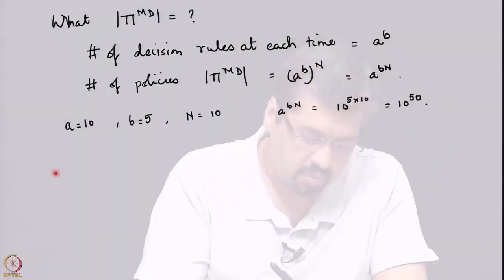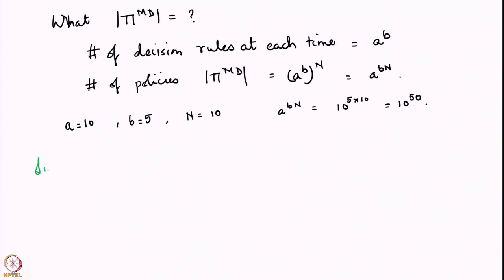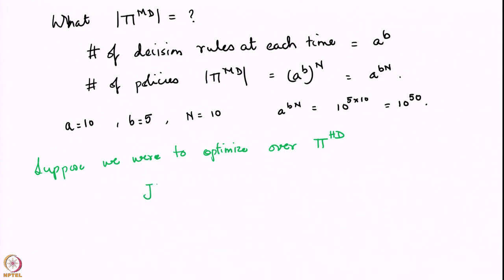Before we get to that, let me make another point. Suppose we were not looking for Markov deterministic policies but instead history dependent deterministic policies. Suppose we were to optimize not over Markov deterministic policies but over history dependent deterministic policies, which means the optimal cost we are looking for - let us denote that by J double-star of x_0 - is the minimum over pi in Pi_HD of the cost from that particular policy.